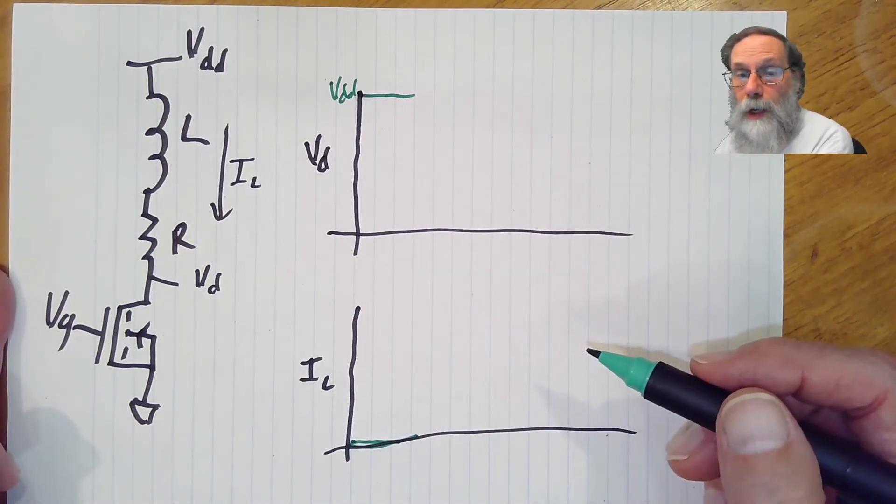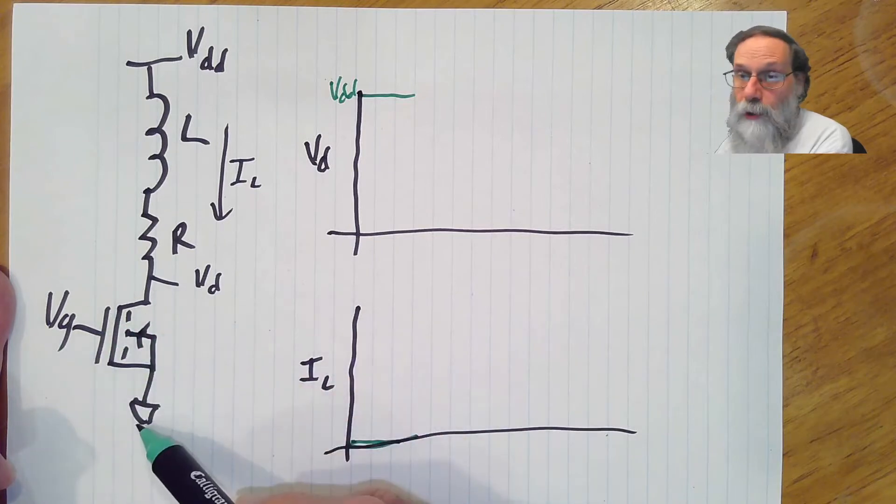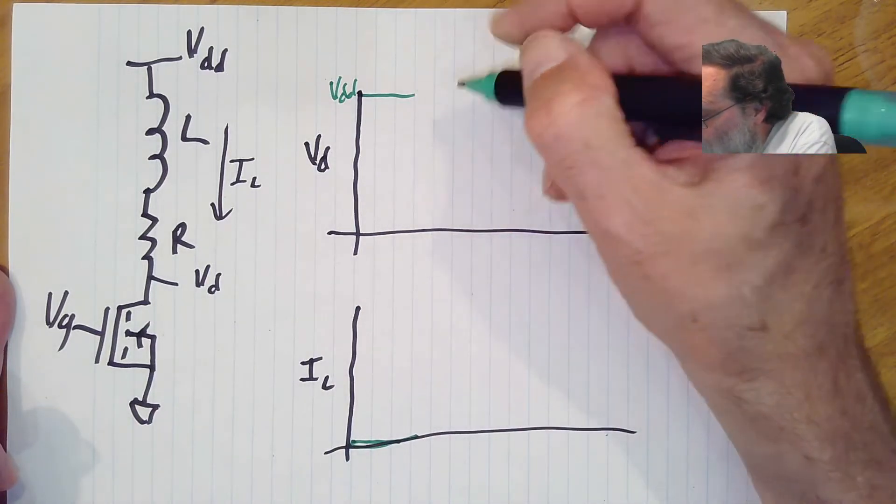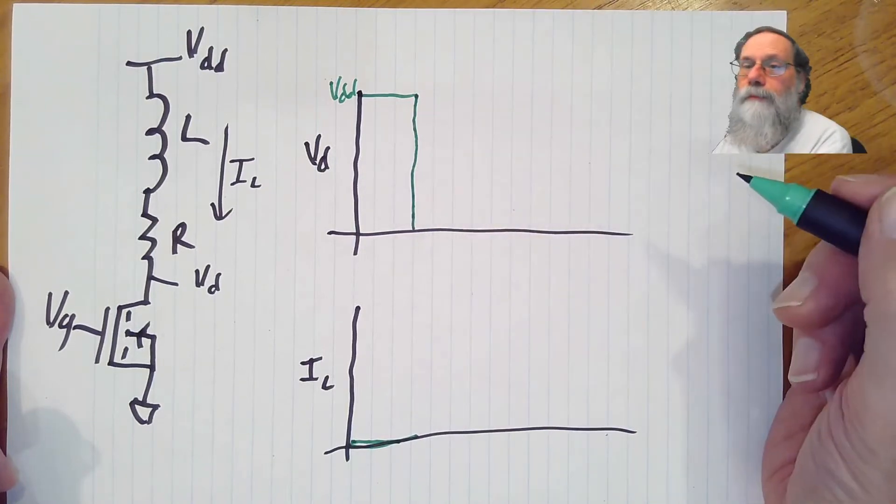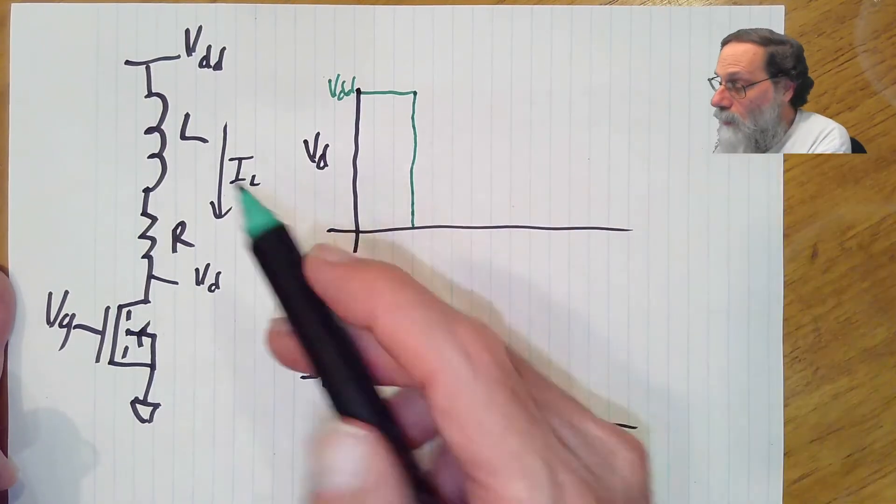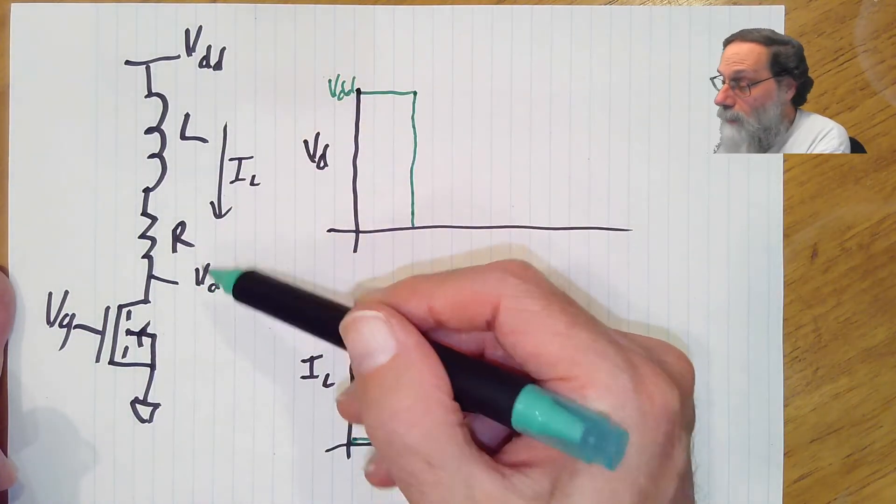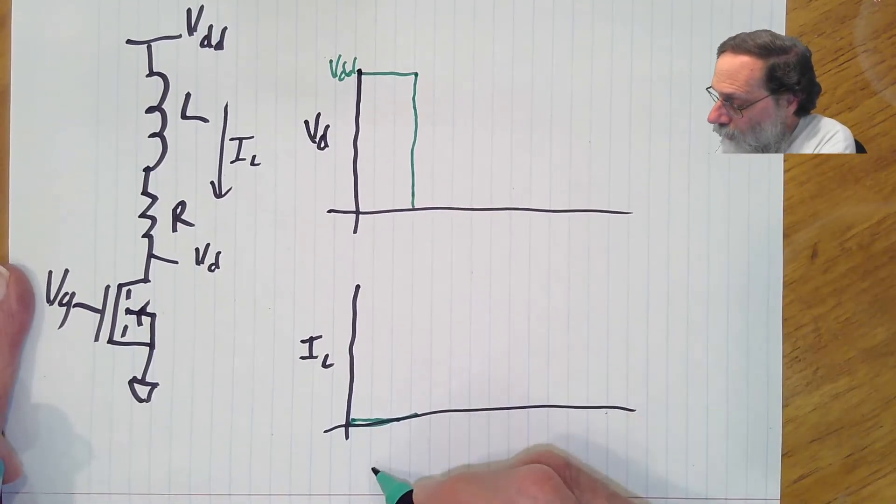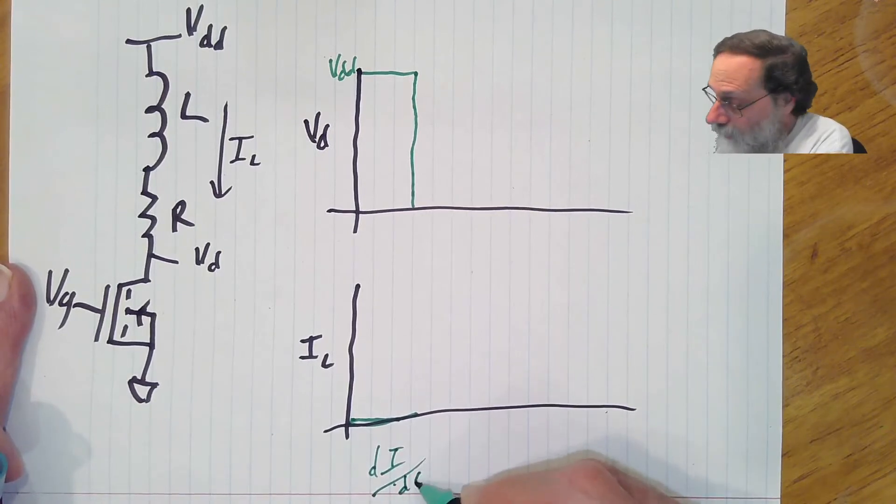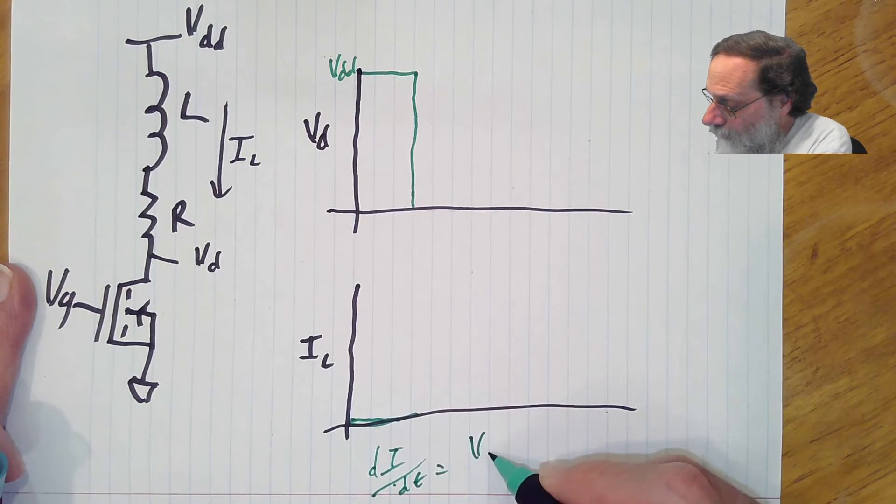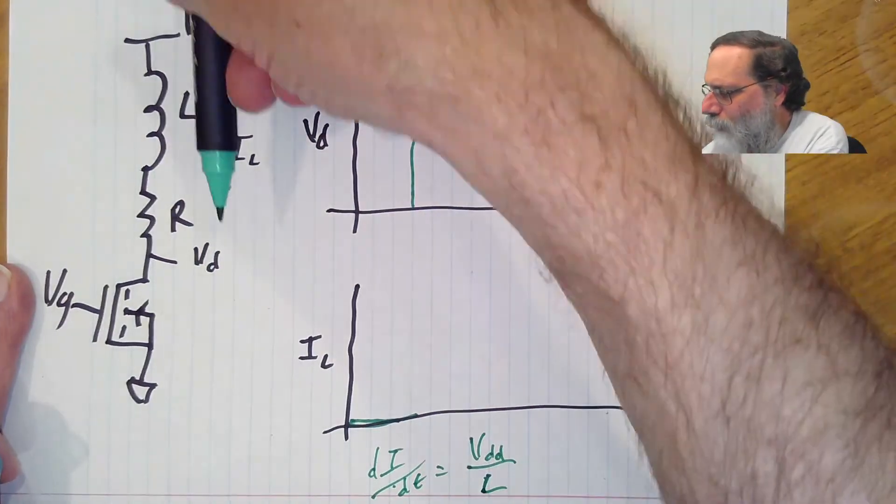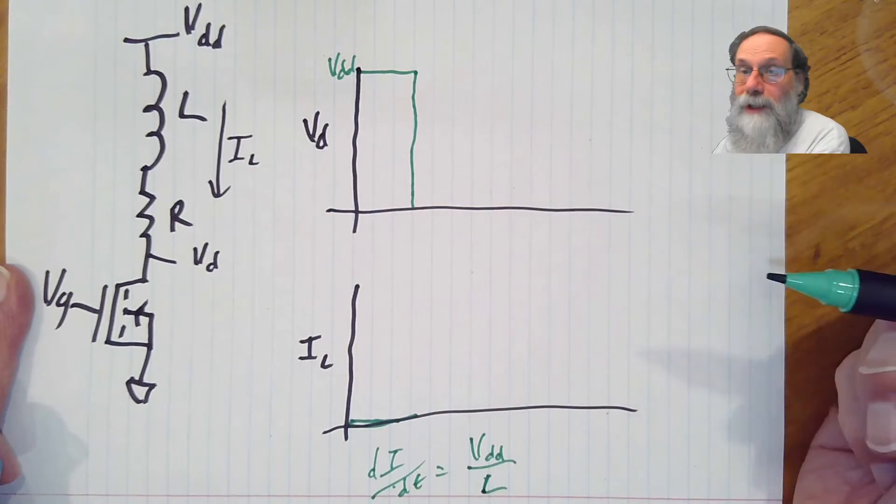What happens when we turn the transistor on? Well, when we turn the transistor on, we can get a large current through here, and the voltage VD can drop very rapidly. So this voltage will drop. What does that mean in terms of the voltage across the inductor? Well, it's going to be VDD minus VD. VD has just dropped close to zero, so we've got VDD across the inductor, and so we're going to get a current flow. DI/DT is initially VDD over L.